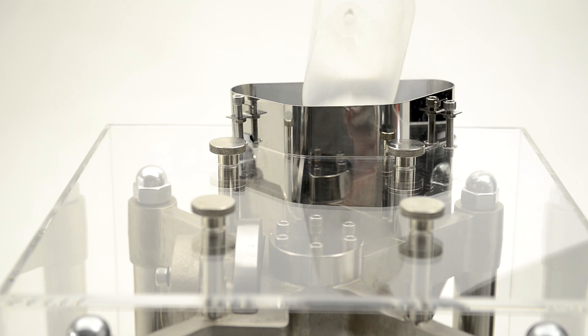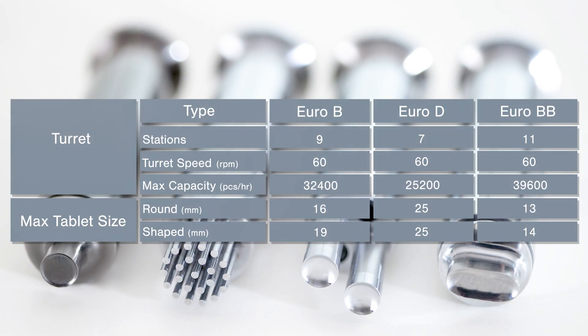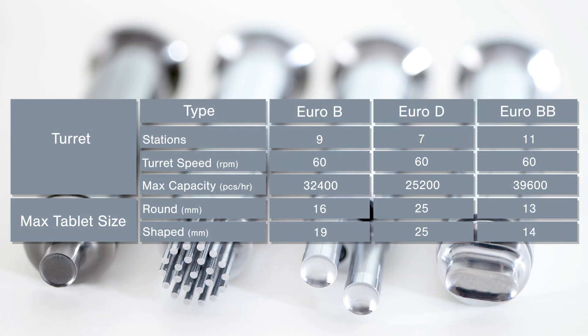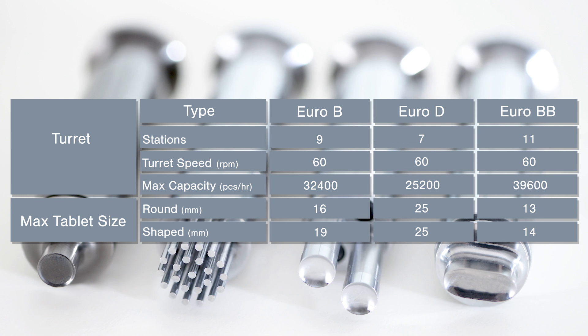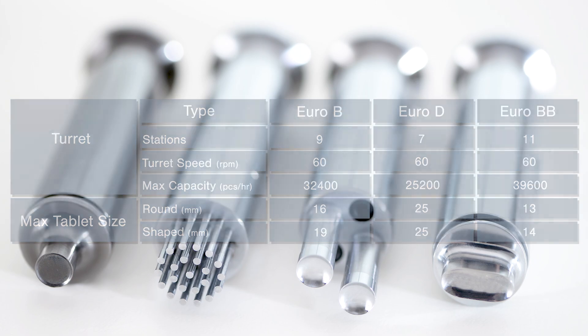The RTP-118 can be supplied with a 9-station Euro-B turret, 7-station Euro-D, or an 11-station Euro-BB turret, which not only makes tooling easily accessible, but it can also hold both round and key tooling, allowing you to produce tablets to suit your customers' needs.